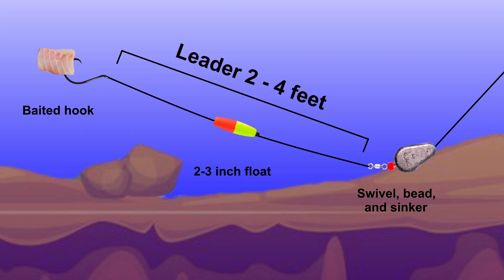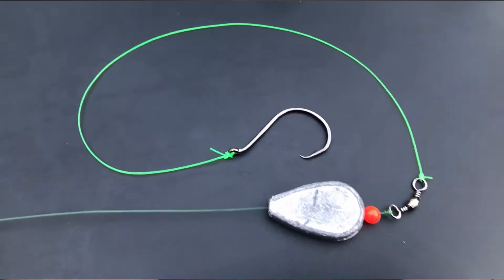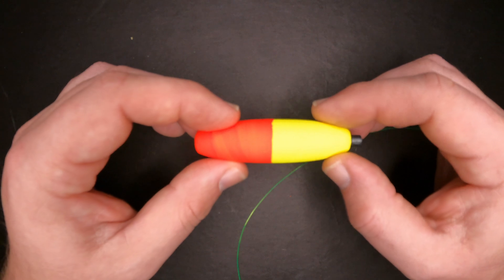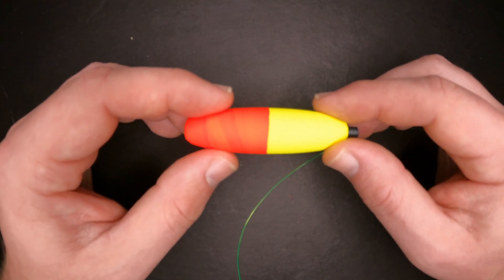The Santee Cooper rig is a very popular catfish rig and it's very similar to other rigs like a Carolina rig or a slip sinker rig. The only difference being the float that is attached to the leader.